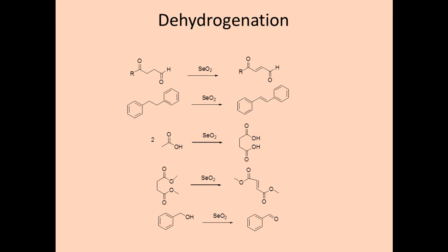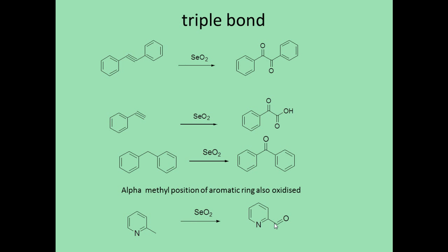Next is dehydrogenation. Selenium oxide can perform dehydrogenation in many dicarbonyl compounds, simple diphenyls, acids, esters, or alcohols, producing a double bond (alkene group). This includes dimerization of acids, elimination of hydrogen from ester groups, and conversion of benzyl alcohol to benzaldehyde. In natural product chemistry, selenium oxide is used to produce double bonds useful for structural determination of natural product molecules. The triple bond can also be oxidized using selenium oxide to give diketo groups, and terminal alkynes give acids.